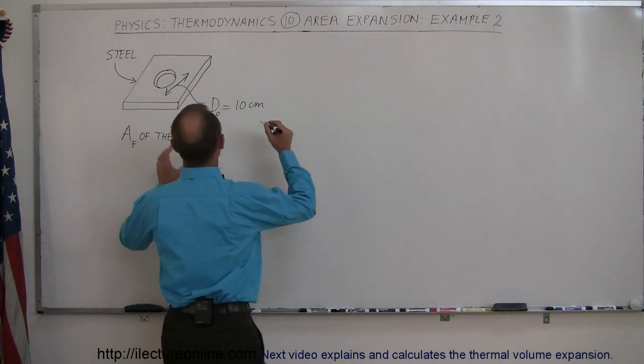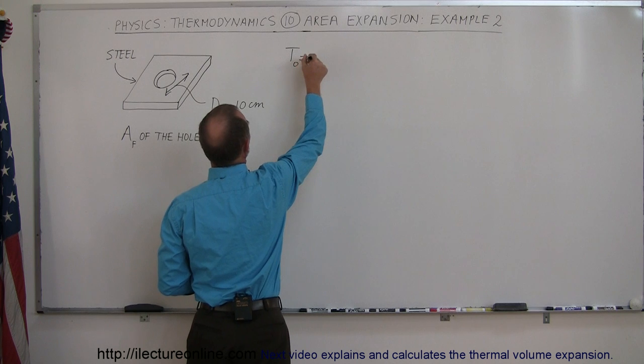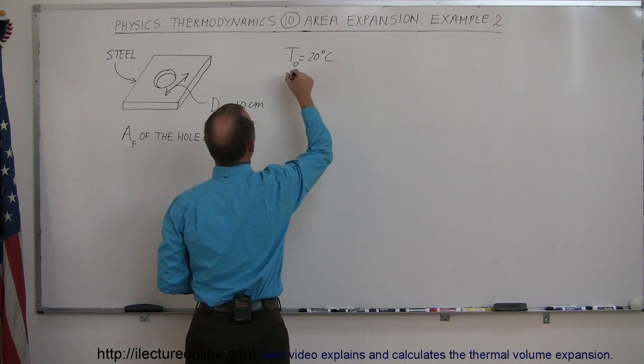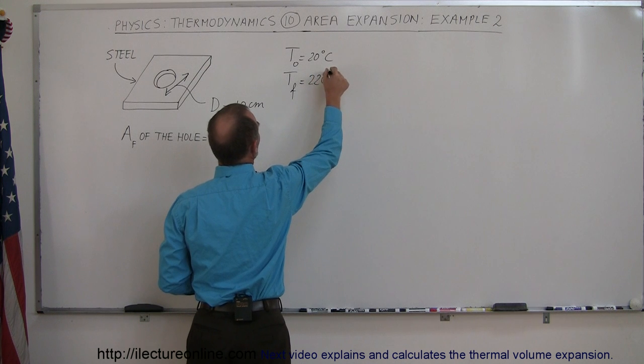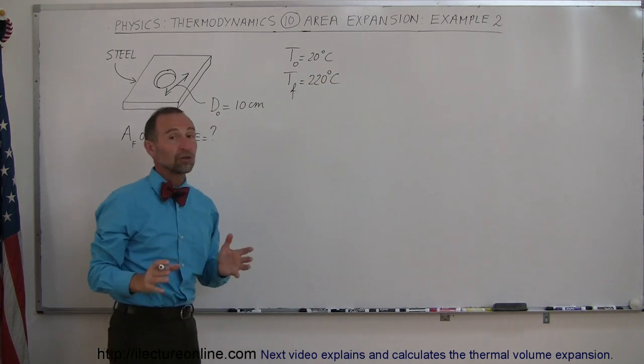Let's say that we have a metal plate here with initial temperature T initial equal to 20 degrees centigrade and temperature final equal to 220 degrees centigrade. So it went through a temperature change of 200 degrees.